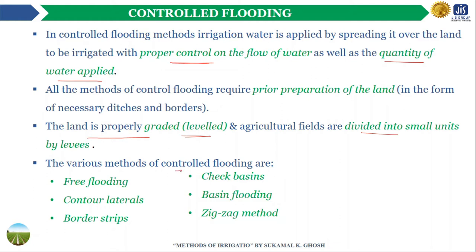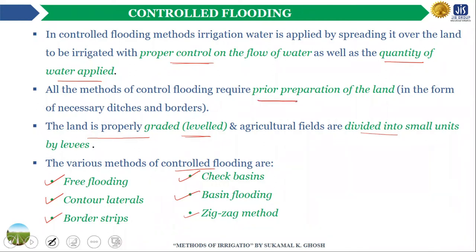Controlled flooding can be categorized into various methods such as free flooding, flooding by contour laterals, flooding by border strips, check basin flooding, basin or ring basin flooding, zigzag method, and others. All these methods of controlled flooding require prior preparation of land in the form of ditches, borders, levees, or checks.